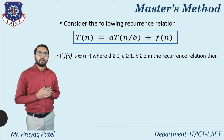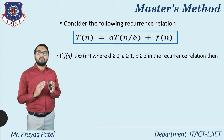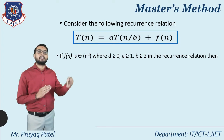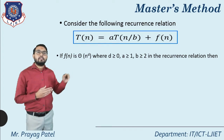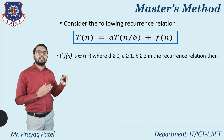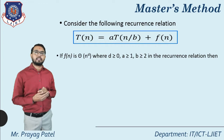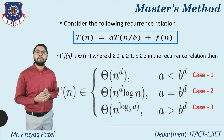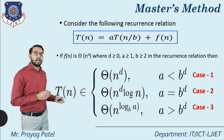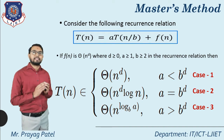Here a ≥ 1, meaning the value of 'a' is 1 or greater. And b ≥ 2, meaning the value of b is 2, 3, 4, and so on. Then we consider the following formula for finding the solution using the master's method.